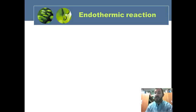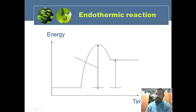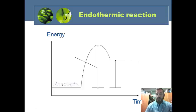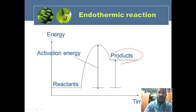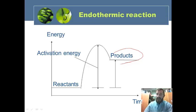For an endothermic reaction diagram, label the same four things. Reactants are on the left, products on the right, and the activation energy is much higher this time. In an endothermic reaction, the products are always at higher energy, meaning you need to put more energy in to get the reaction going. The delta H for this reaction is a positive value — a positive delta H.